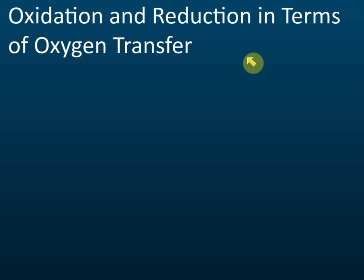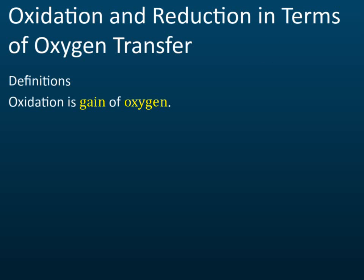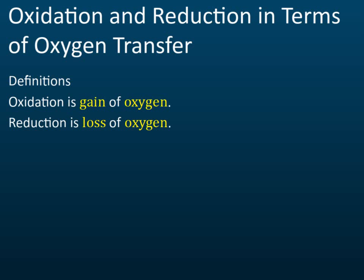The easiest method is identifying oxidation and reduction through the transfer of oxygens. According to the definition, oxidation is a gain of oxygens — if a chemical receives or gains oxygen, we say it undergoes an oxidation reaction. You just check whether a substance gains or loses oxygen. However, this only applies to certain reactions, not all.